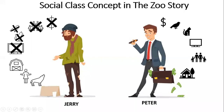Long story short, Peter belongs to the upper class, while Jerry is a member of the lower class. Now that we have seen the characteristics of the men — and indeed their respective classes — here are some quotations from their conversation to understand the social dynamic better.